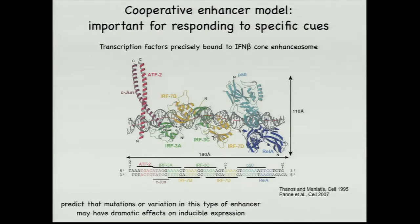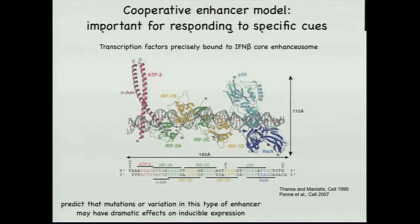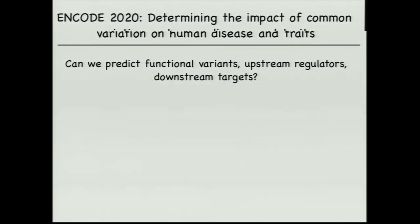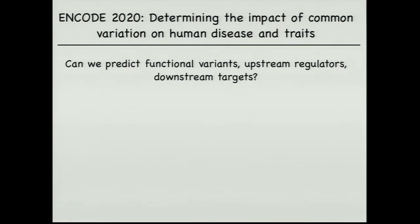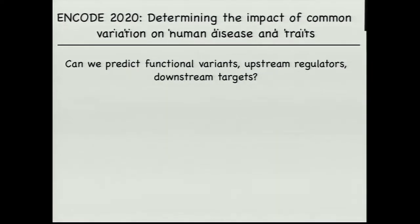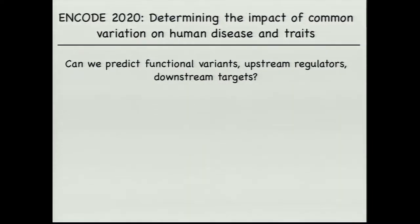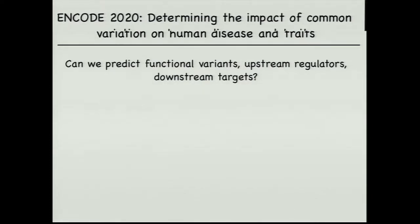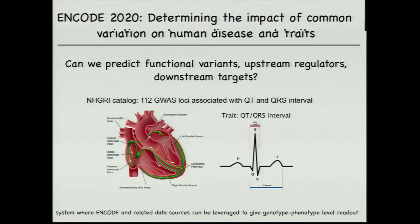That's a good segue into how we can use enhancers to begin to reinterpret GWAS data. Determining the impact of common variation on human diseases and traits is something everyone has been discussing. Can we predict functional variants? Can we use functional variants to predict upstream regulators and ultimately downstream targets? I'm going to focus on a particular set of traits to show a concrete example of how enhancers can allow us to interpret GWAS data.